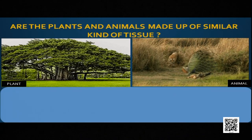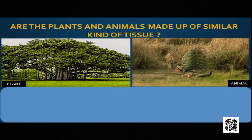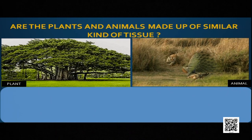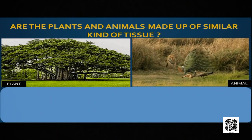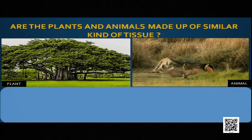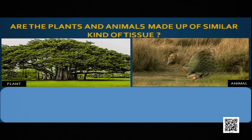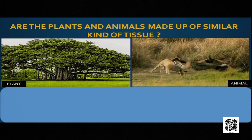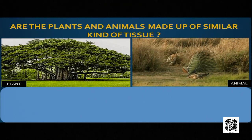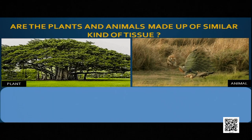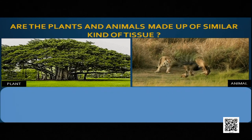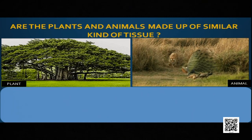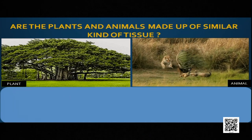Plants are made up of tissues and animals are also made up of tissues. But are plants and animals made up of similar kinds of tissues? A plant is stationary — it cannot move, it is fixed. But an animal moves from one place to another in search of food and a partner. So definitely the tissues of plants and animals vary from each other.